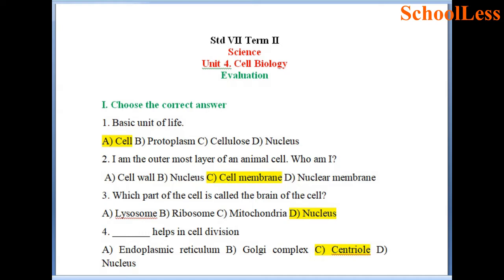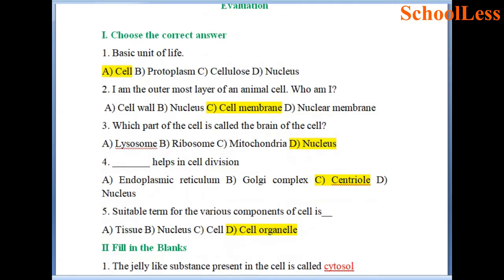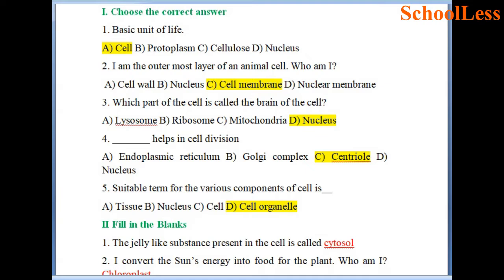Which part of the cell is called the brain of the cell? Options are A lysosome, B liposome, C mitochondria and D nucleus. Nucleus is considered as the brain of the cell. Choice D is the right answer.